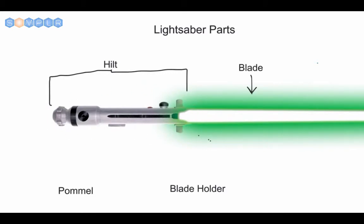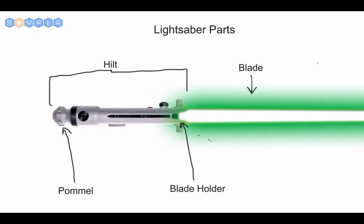Now the hilt is comprised of two other sections. The first one being the blade holder — as the name suggests, this is the section that holds the blade. That'll be important as you become a sabersmith and start to build your own blades. The next section is the pommel, which is the butt end of your lightsaber — this section right here, the bottom. So again, the hilt is made of the pommel section as well as the blade holder section.